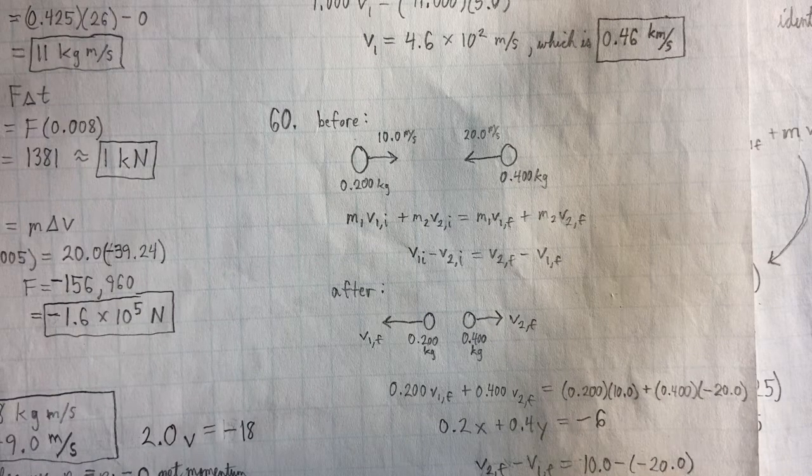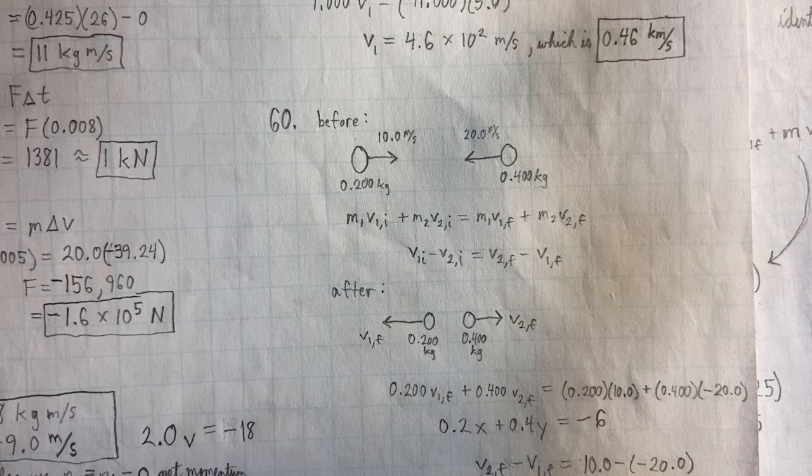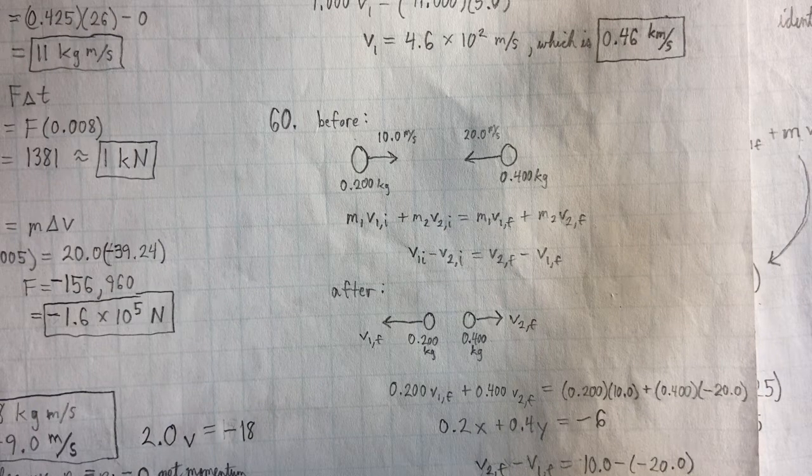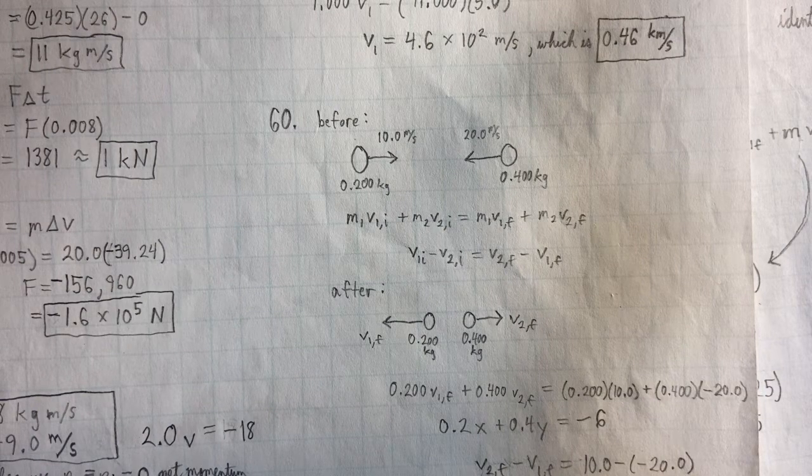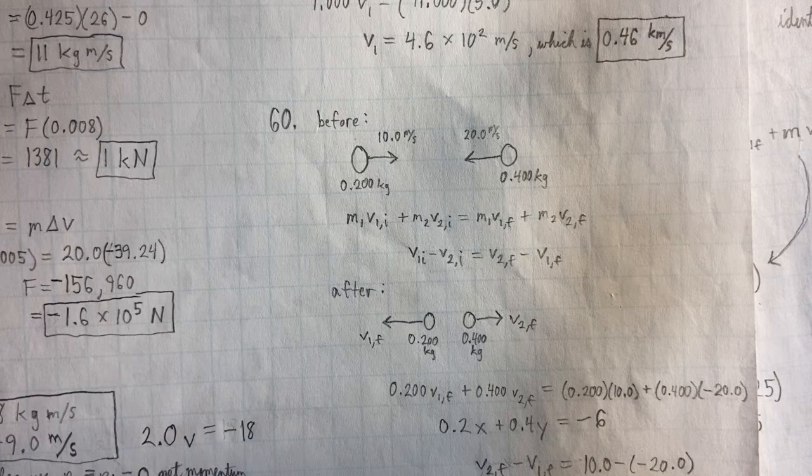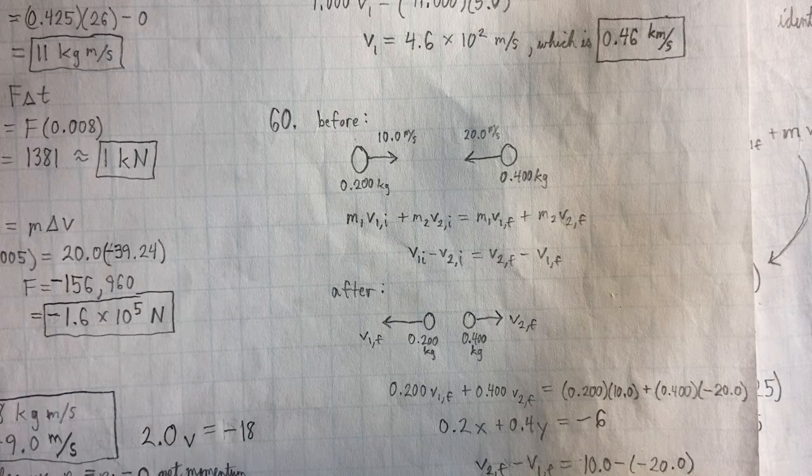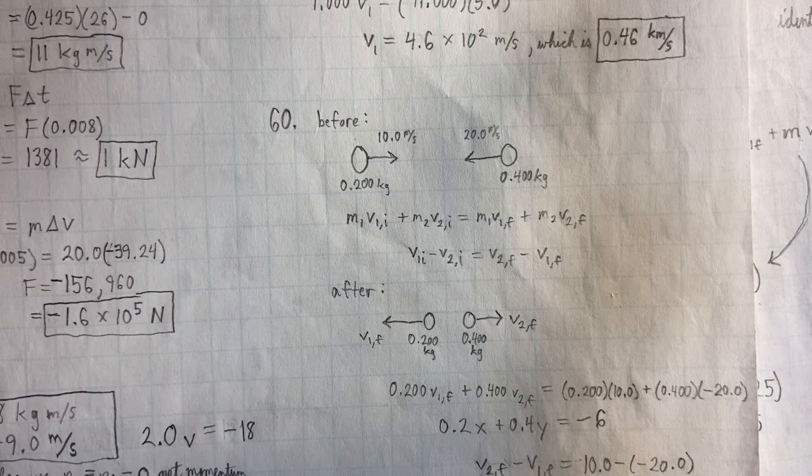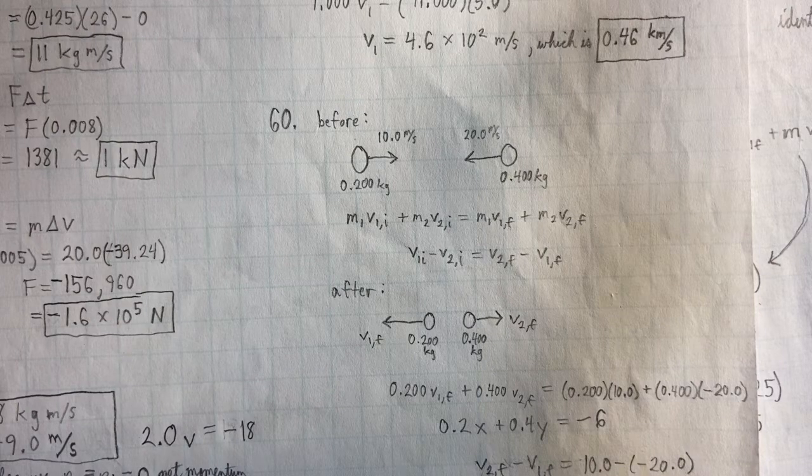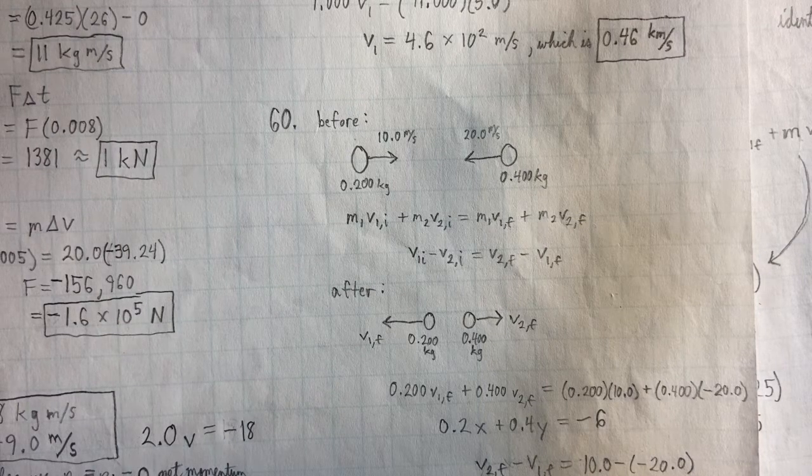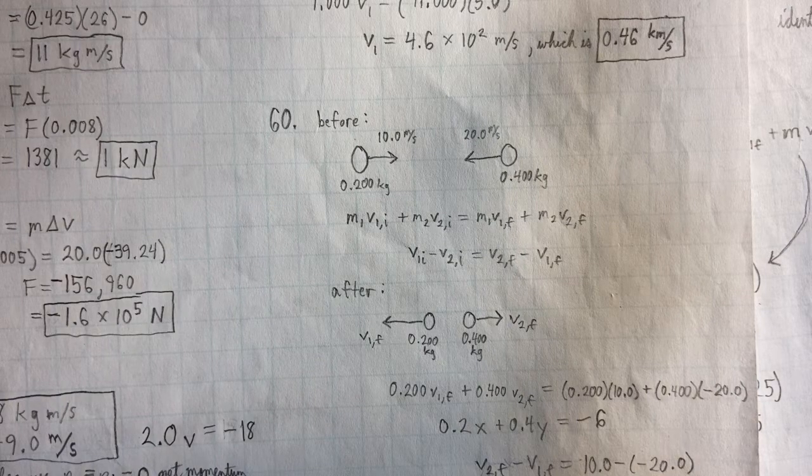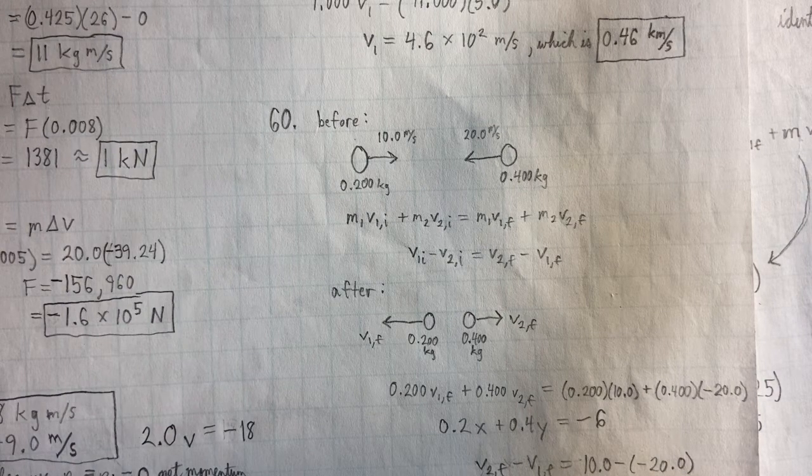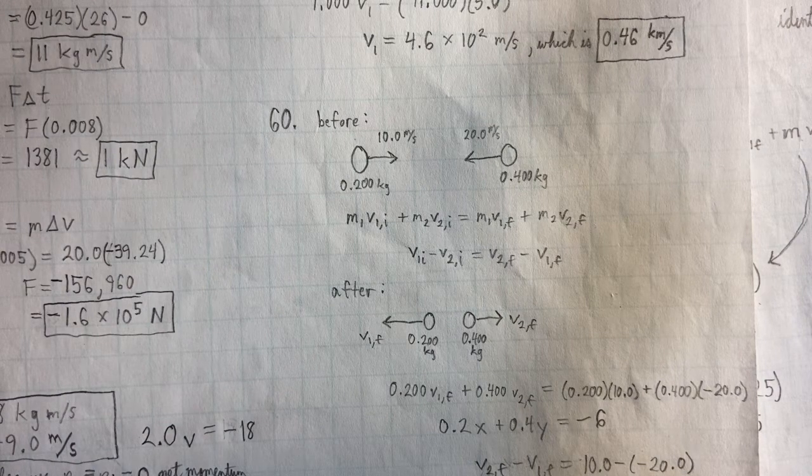So the before sketch, we've got one ball heading east and the other one heading west. We put in the given masses and velocities. And then we lay out our two equations, which we can always lay out for elastic collisions. M1V1I plus M2V2I equals M1V1F plus M2V2F. And then the relative velocity equation, V1I minus V2I equals V2F minus V1F. Remember that the relative velocity equation is just a consequence of the conservation of kinetic energy. And that derivation I showed you in the video.